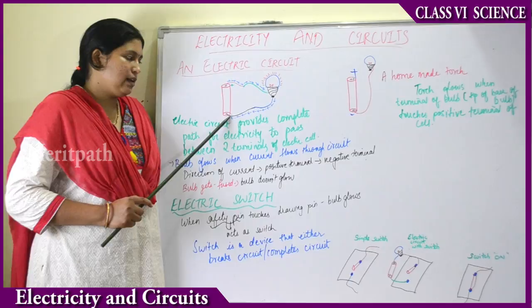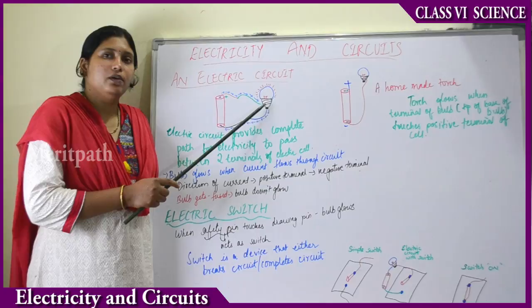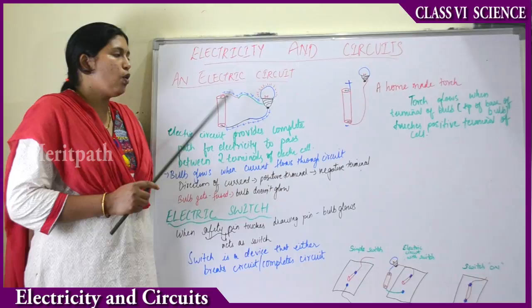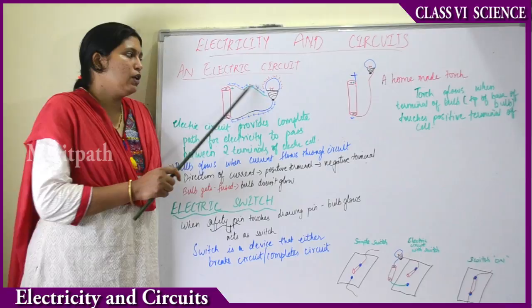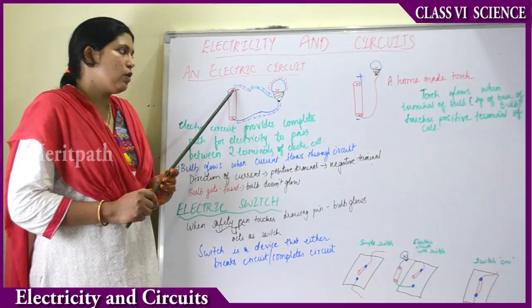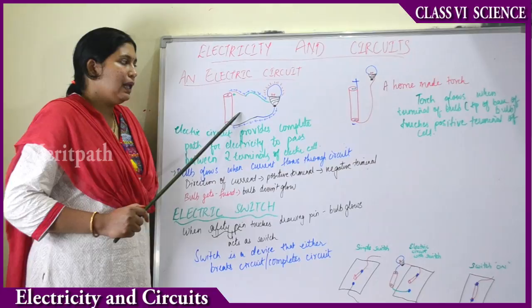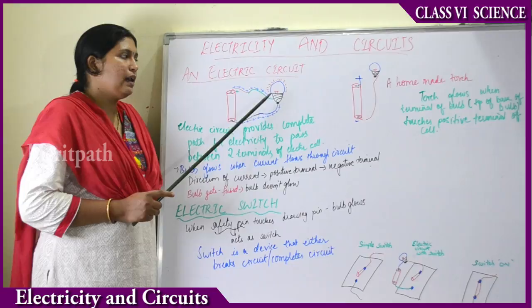A cell has a positive terminal and a negative terminal. Two wires are connected to the two terminals of the cell, and the other two ends are connected to the base and tip of the bulb. In an electric circuit, the flow of current is from the positive terminal to the base of the bulb, and from the tip of the base of the bulb back to the negative terminal of the cell. Thereby the circuit completes and the bulb glows.